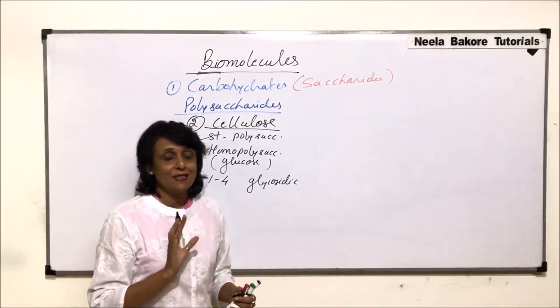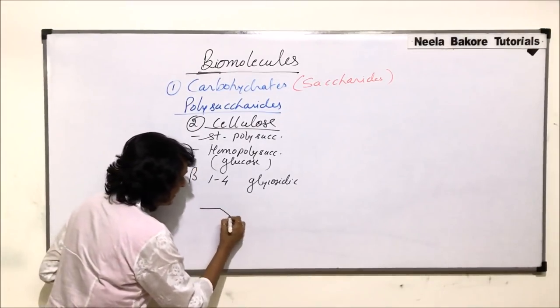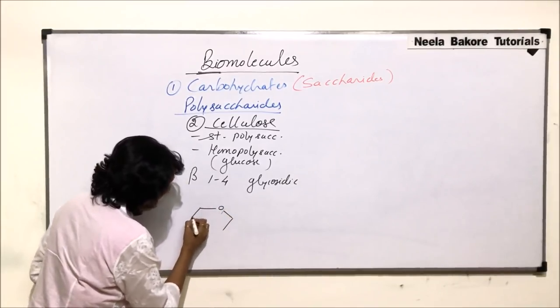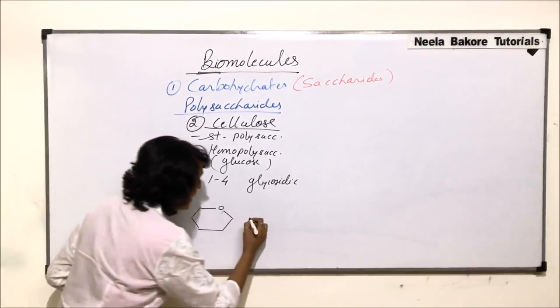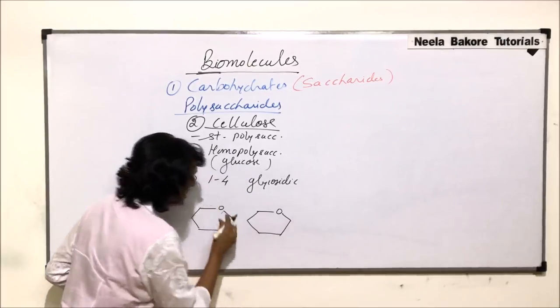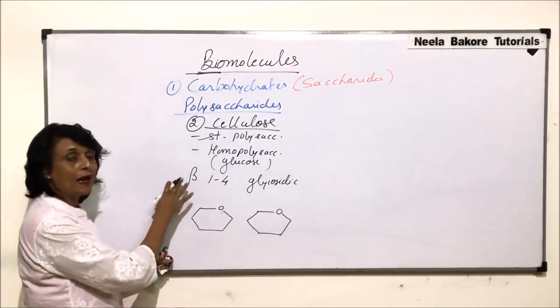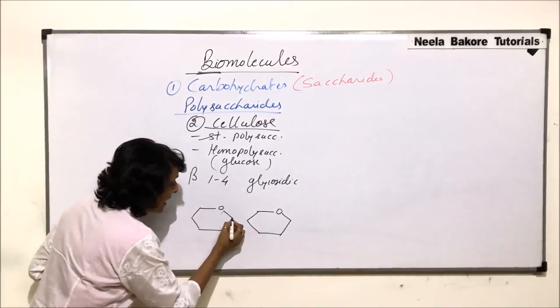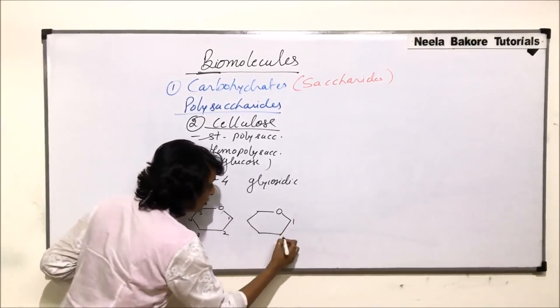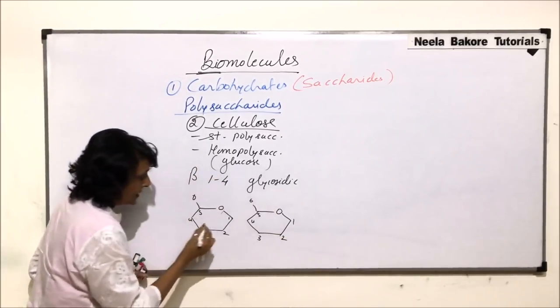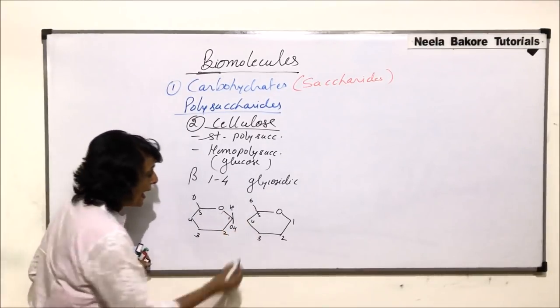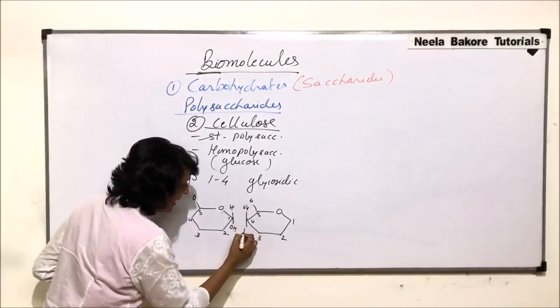To understand it in a simple manner, suppose we make this glucose molecule, the ring structure, and label the carbon numbers to see how the bond formation takes place. This is carbon number 1, 2, 3, 4, 5 and 6. In this case, this is H and OH, and here it is OH and H.